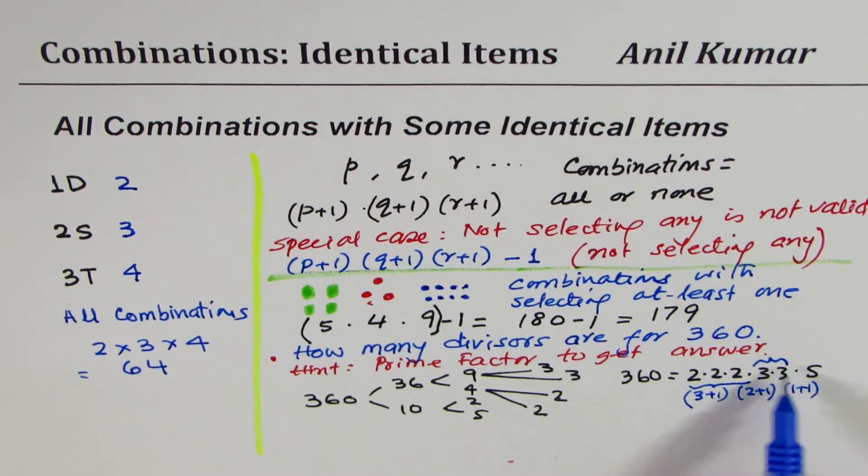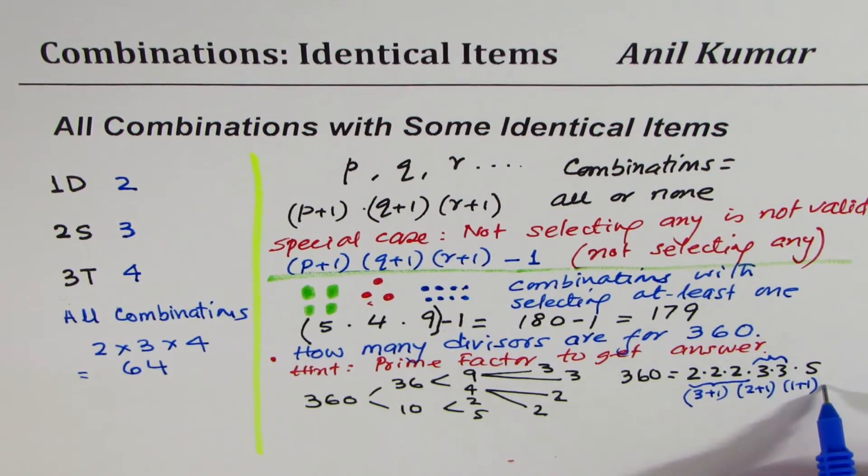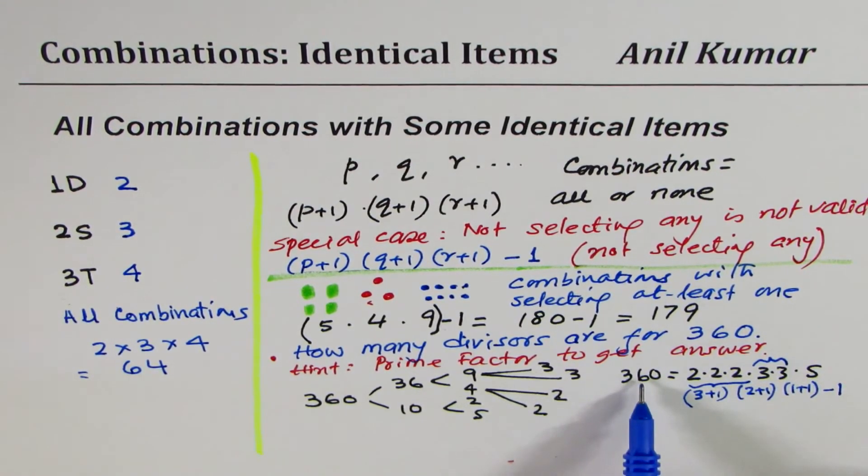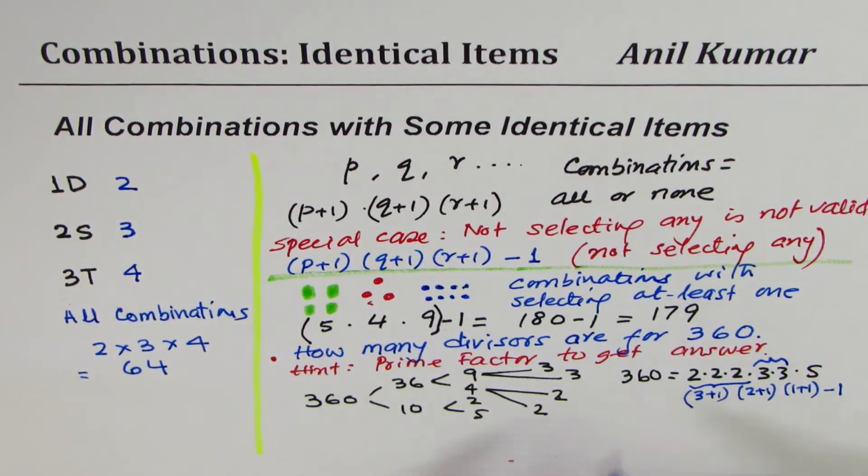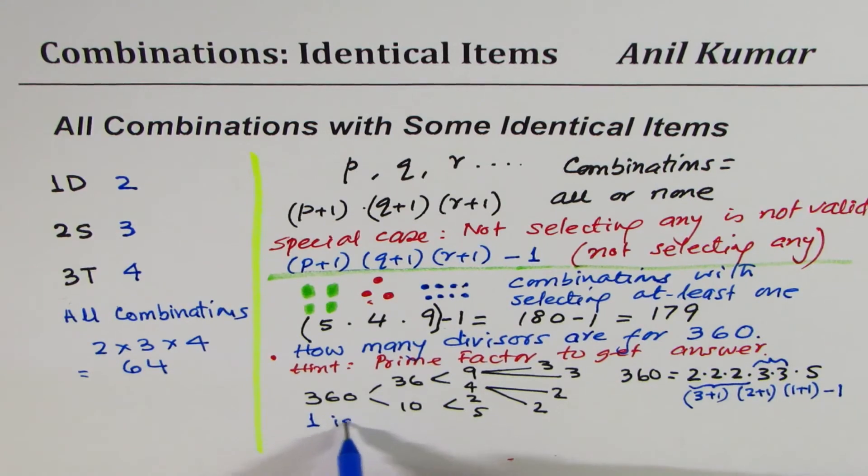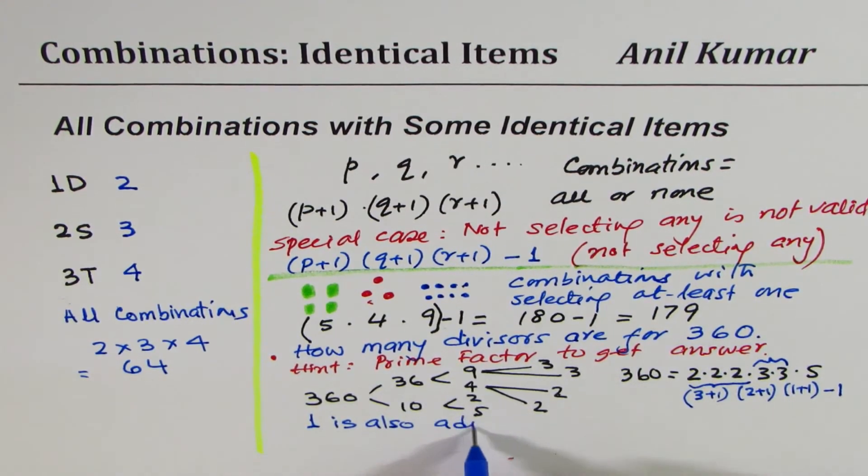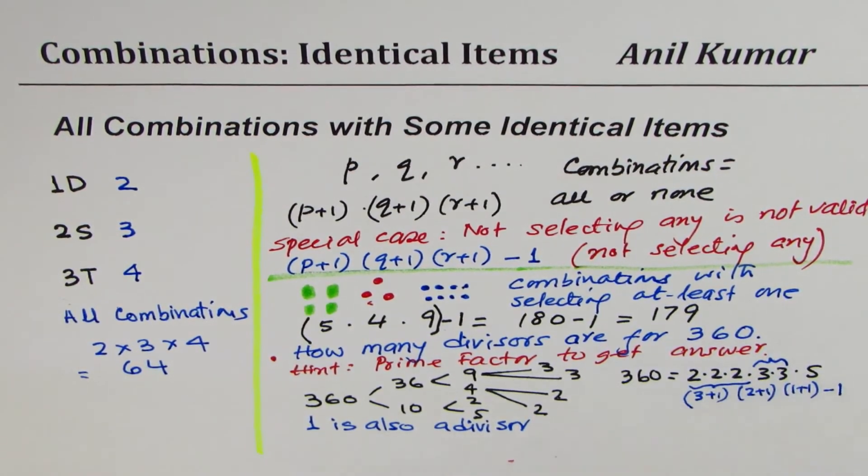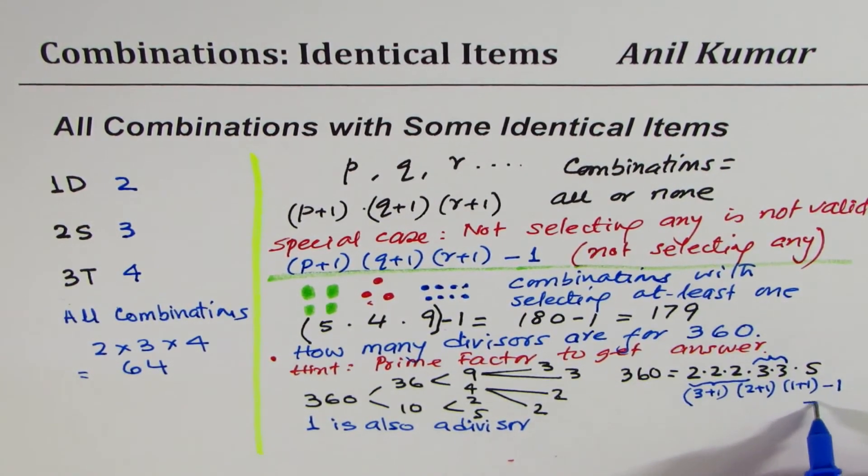Now, not selecting makes it 0. Can you divide by 0? No, you cannot. So minus 1 for not selecting. Have I missed something? If I select them all, it means 360, so I've included 360. How about 1? 1 is also a divisor. Remember, 1 is also a divisor, which we did not include here. So we have to include 1. So I'm adding 1 here.